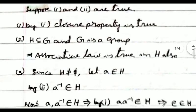Since G has associativity and H is a subset of G, for a, b, c in H, we also have them in G. Since G is a group, associativity holds: (ab)c = a(bc). So associativity is proved for H.